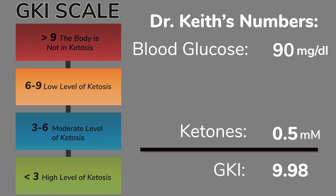Anything above nine on the GKI means your body has not transitioned into a fat-burning state. Using my numbers as an example: I have a hard time getting my blood sugar below 90, and a pretty difficult time getting my ketones above 0.5.